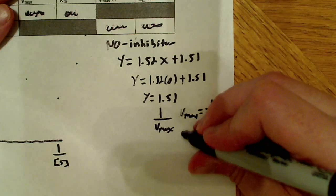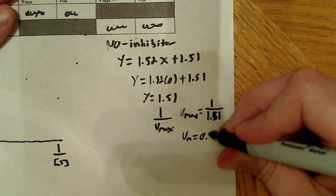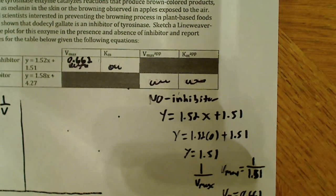1 divided by 1.51 gives me VMAX equals 0.662. So under VMAX for no inhibitor, I'm going to write 0.662.